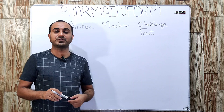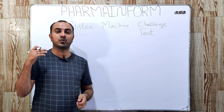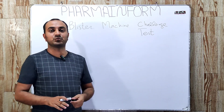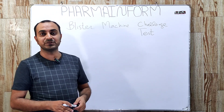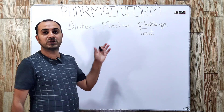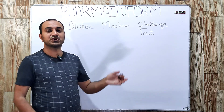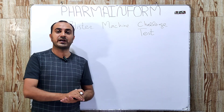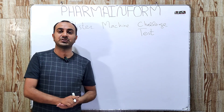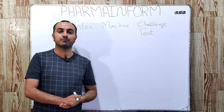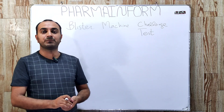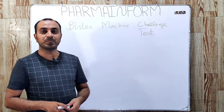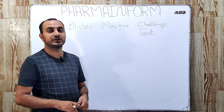Blister machines are used for blistering of tablets, capsules, and pills. The challenge test for blister machines is very important to ensure that our machine is working properly and our product is blistered with good quality.